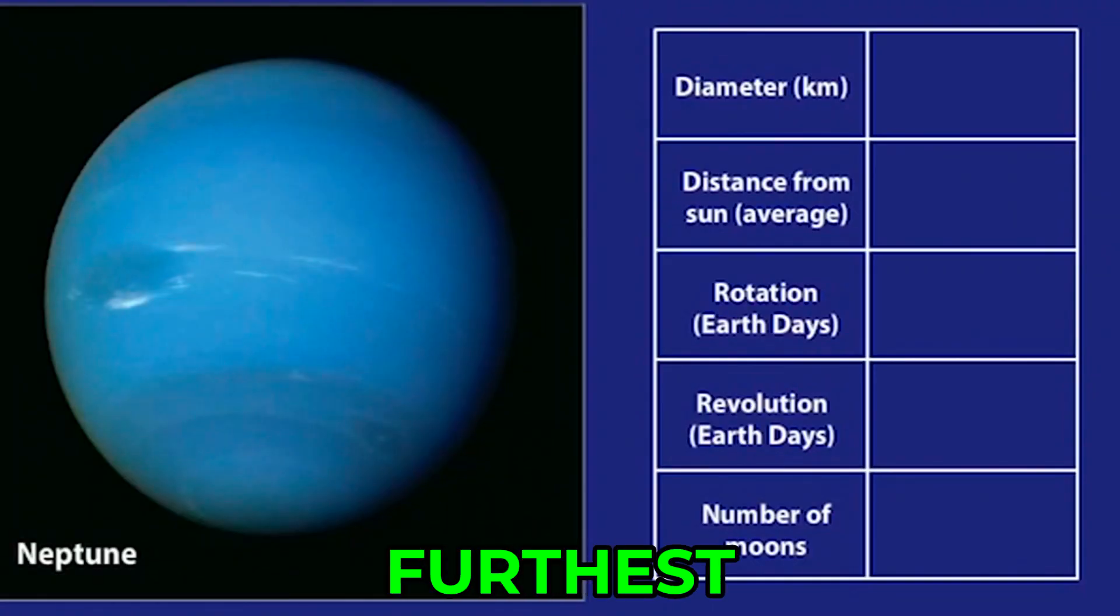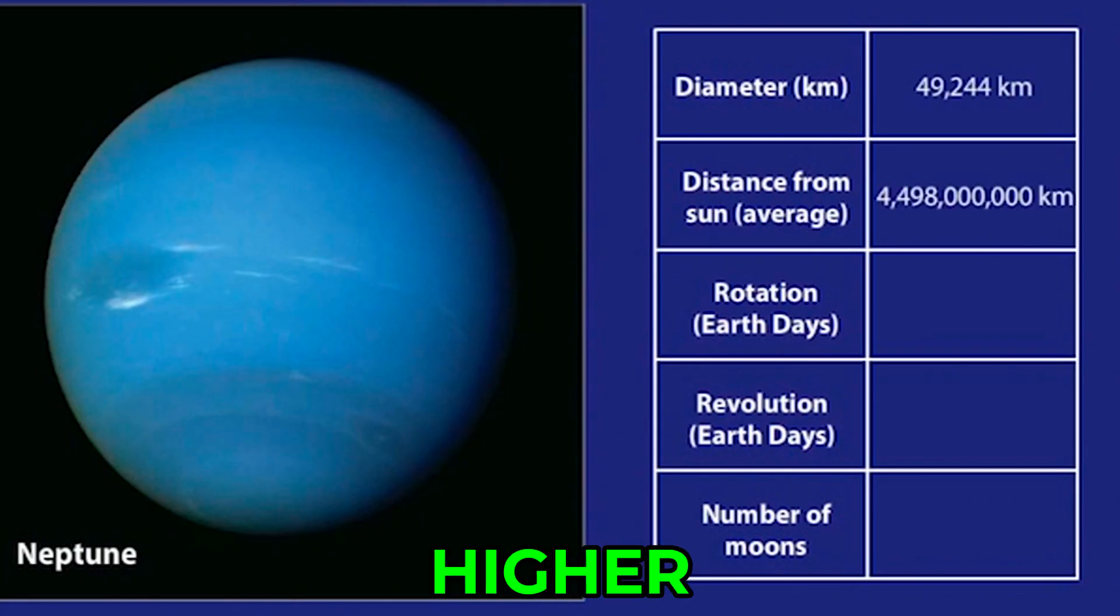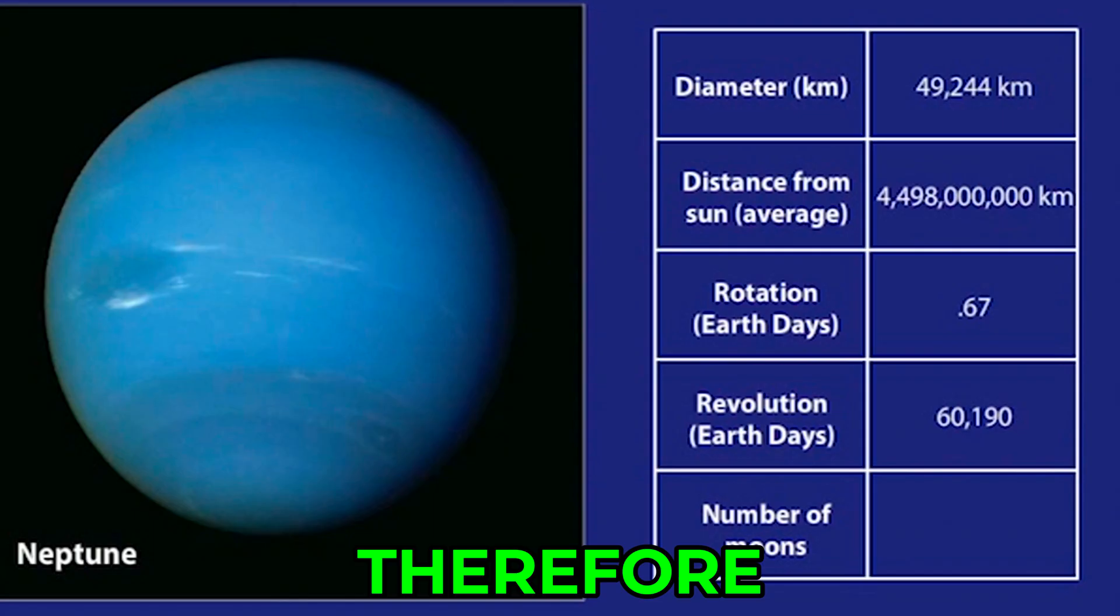Neptune is the furthest planet from the Sun. This gas giant is similar to Uranus in that it has a higher amount of frozen gases like methane, water, and ammonia, and therefore it is also called an ice giant. The highest known wind speeds in the solar system, measuring up to 2,100 kilometers per hour, are found on Neptune. Thirteen moons orbit Neptune.